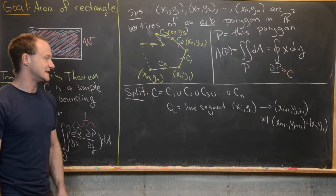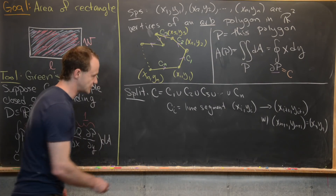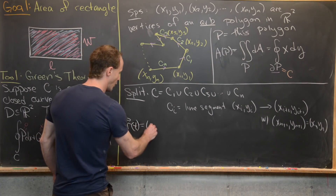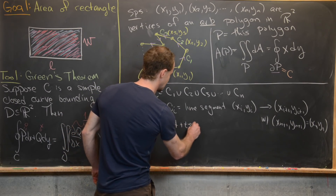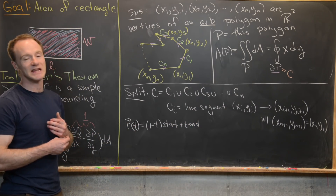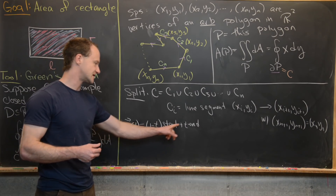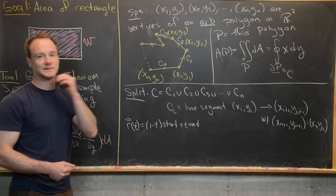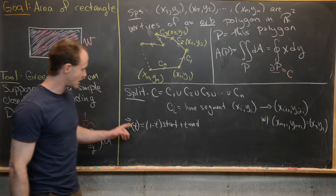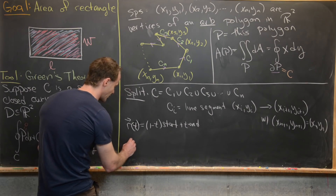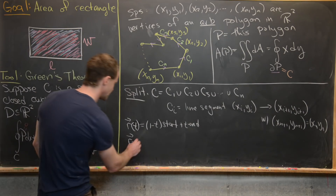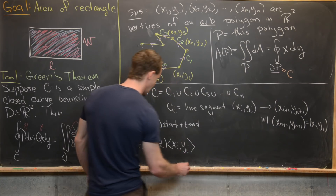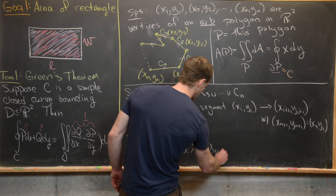Next we parametrize each line segment. The standard parametrization for a line segment is R(t) = (1−t)·(start) + t·(end), for t on [0,1]. Plugging in t=0 gives the start, t=1 gives the end. So for each segment, Ri(t) has components: Xi+1 − Xi times t plus Xi, and Yi+1 − Yi times t plus Yi, with t running on the unit interval zero to one.